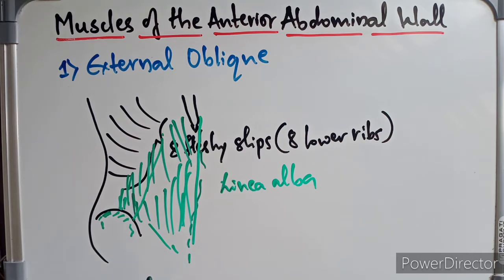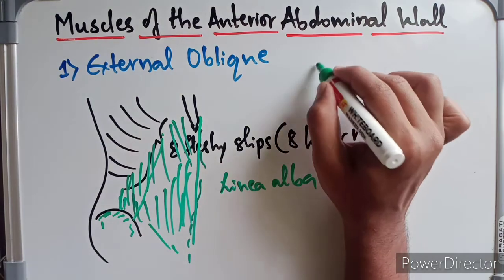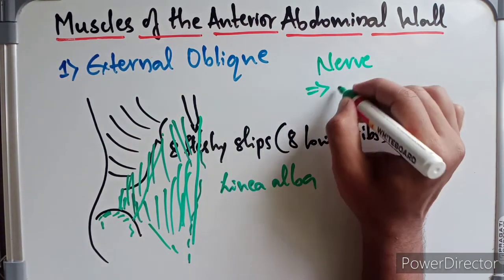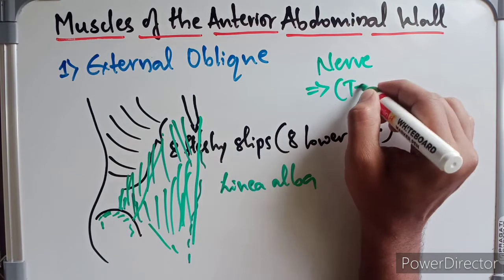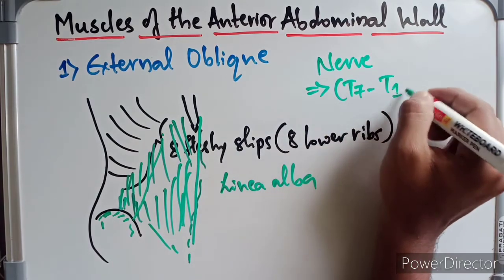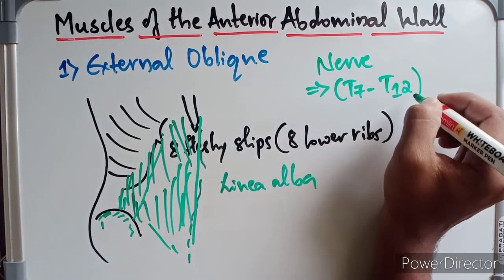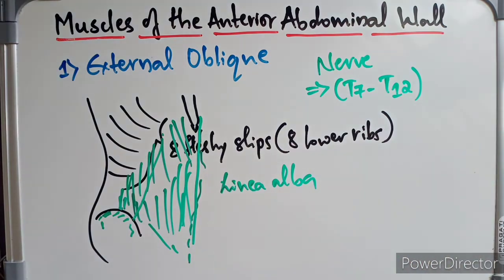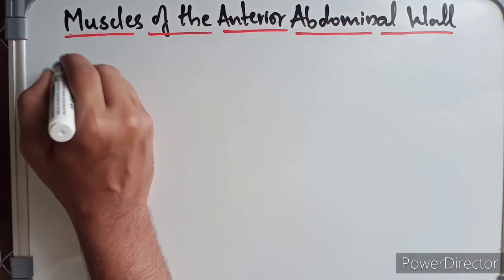The nerve supply of the external oblique is from the anterior primary rami of the lower six thoracic spinal nerves, T7 to T12. This concludes the external oblique, and now we move on to the internal oblique muscle.